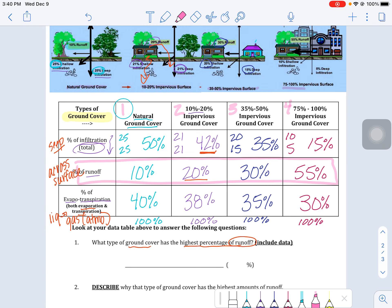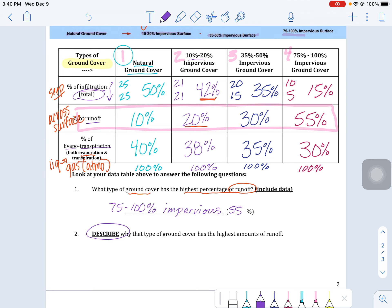So for the runoff category, that's this section here. Where do we have our highest number and what ground cover is that? We definitely see that our highest is in this impervious ground cover section, 75 to 100 percent, and the actual percent there of runoff is 55.